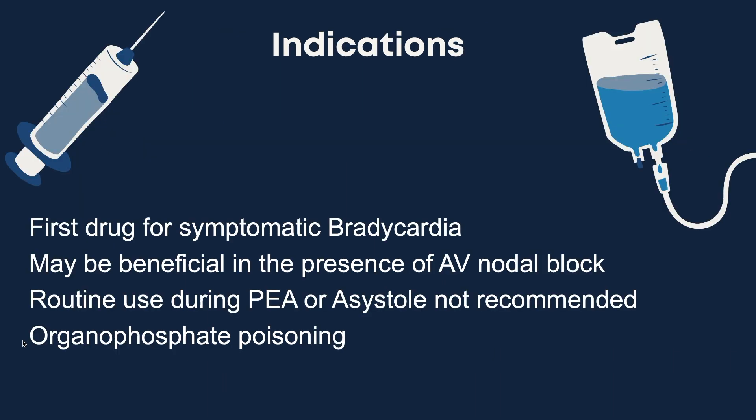Atropine is the first drug in adults for symptomatic sinus bradycardia with or without ACS. It may be beneficial in the presence of AV nodal blocks, but it will not be effective for second degree blocks type 2, third degree blocks, or a block in a non-nodal tissue. Routine usage of Atropine in asystole and PEA is unlikely to have a therapeutic benefit, and it's not part of the AHA guidelines anymore.